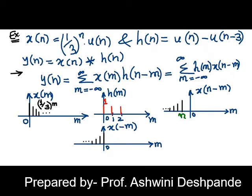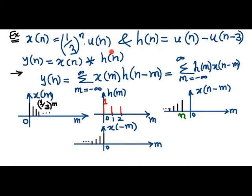Let us perform convolution sum between an exponential signal (1/3)^n u(n) and an impulse response u(n) - u(n-3).